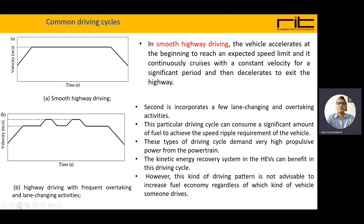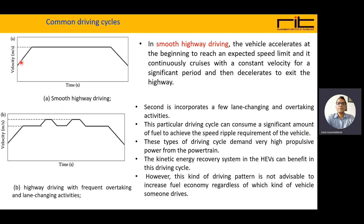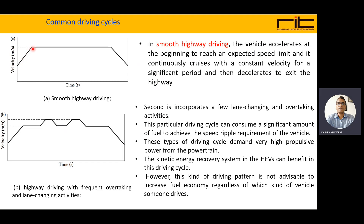The first one is smooth highway driving. Here we can see the vehicle accelerates at the beginning to reach the expected speed limit, then continuously cruises with a constant velocity for a significant period, and then decelerates to exit the highway. This is the smooth highway driving cycle.